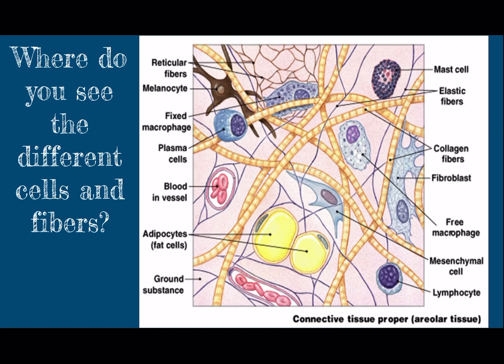Now that we talked about the cells and the fibers, take a closer look — where do you see the different fibers and the different cells? The very thick yellow ones are collagen. The very thin, dark ones are elastic fibers. You can see the reticular fibers up at the top; they're brown and they're kind of mesh-like. I see a melanocyte on the upper left, a lymphocyte on the bottom right, the fibroblast — that cellular glue — on the right-hand middle. Hopefully you notice more of them now that you know their names.